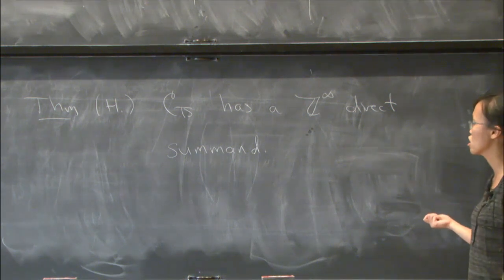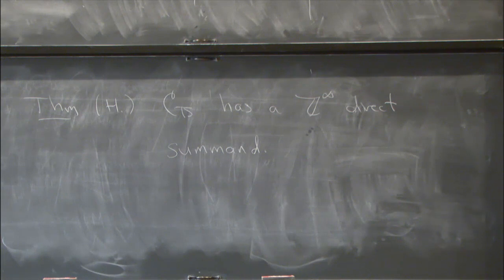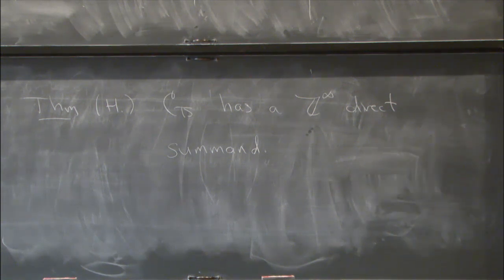So it's using these concordance invariants coming from the knot Floer homology package that I was able to define a homomorphism from the smooth concordance group to Z^∞. And then I studied what this homomorphism looks like on this subgroup, and that led to the result. I'll stop there.